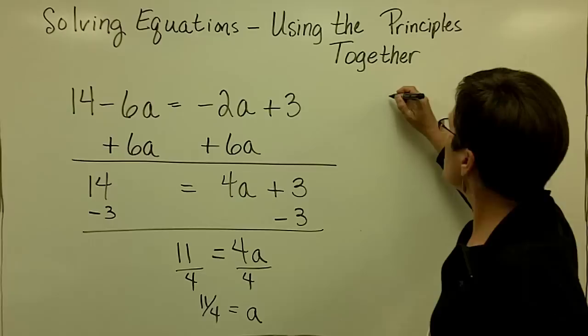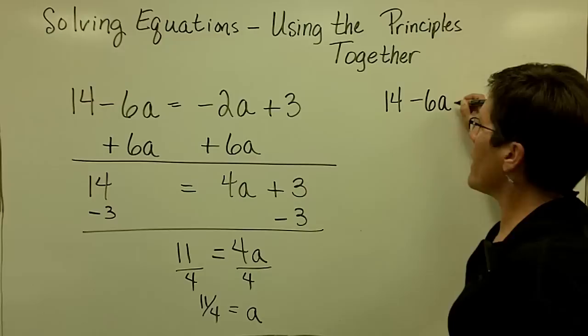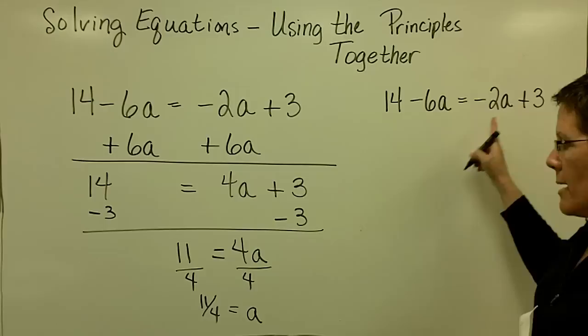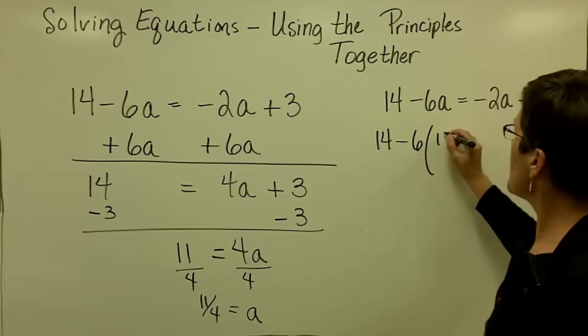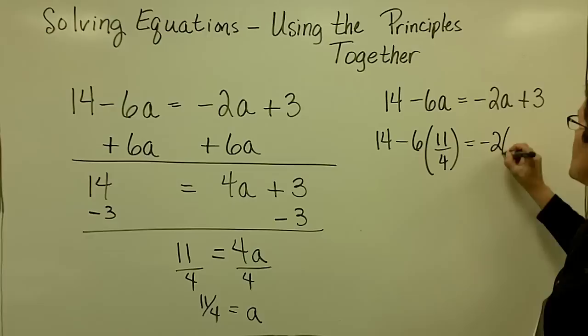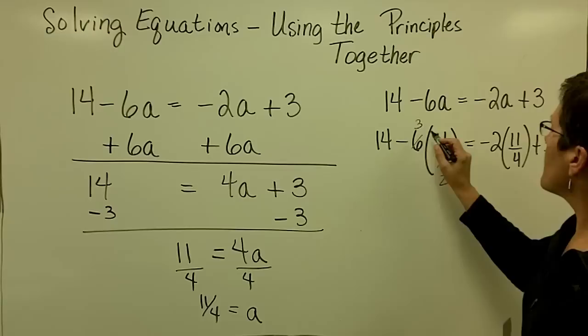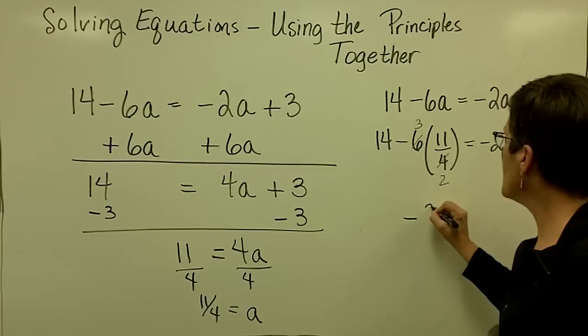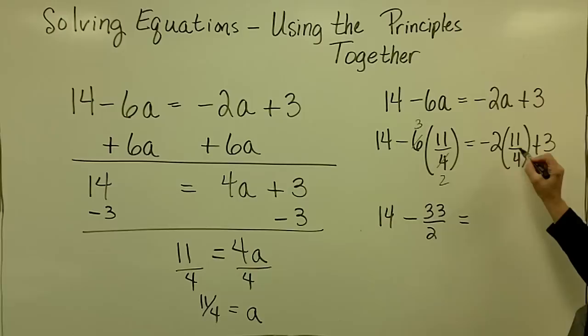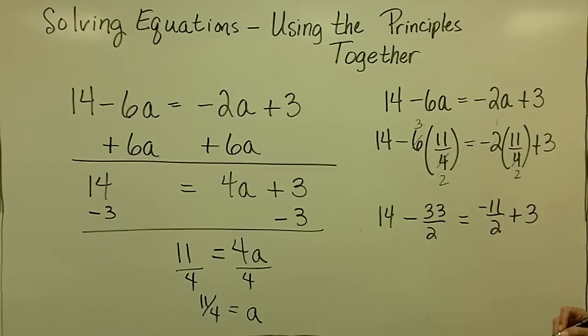Let's go ahead and take the time to check this one too. So the original problem is 14 minus 6 times a equals negative 2 times a plus 3. Anywhere I see a, I'm going to put in 11 fourths. So I have 14 minus 6 times 11 fourths and here a negative 2 times 11 fourths plus 3. Let's multiply these together first because order of operations says that I should. And when I multiply, I'll go ahead and reduce this first. So I have 33 over 2. So 14 minus 33 over 2. Here I'm going to reduce. 2 goes into here once and into here twice. That is negative 1 times 11 is negative 11 halves plus the whole number 3.